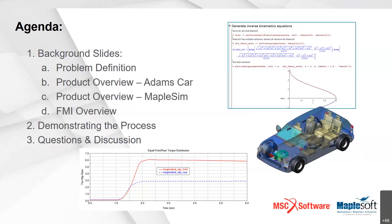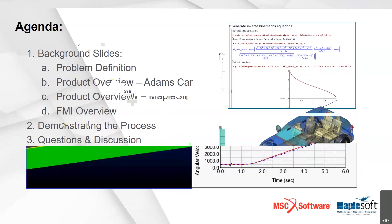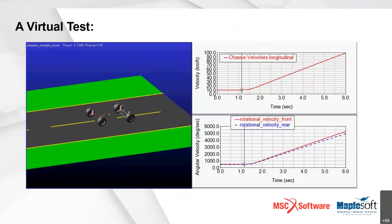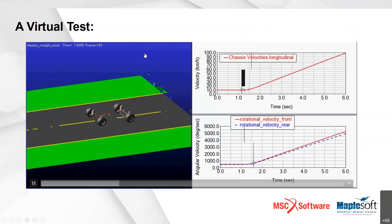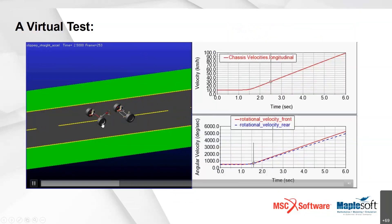Please type any questions you have into the Q&A panel. To get started, let's talk about the problem we're looking at today. I've got a vehicle — this is a virtual car. Yes, it's missing the graphics for the shell, but it has proper mass properties and all the proper connections. This is a fairly detailed model of a virtual vehicle.